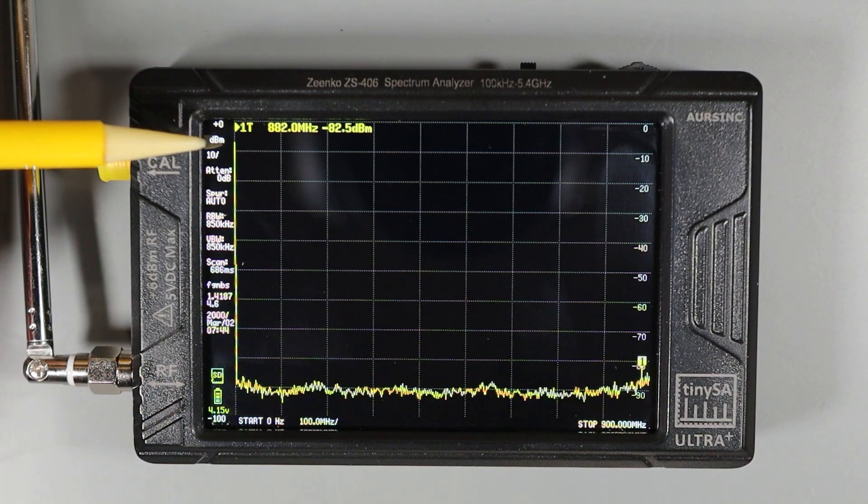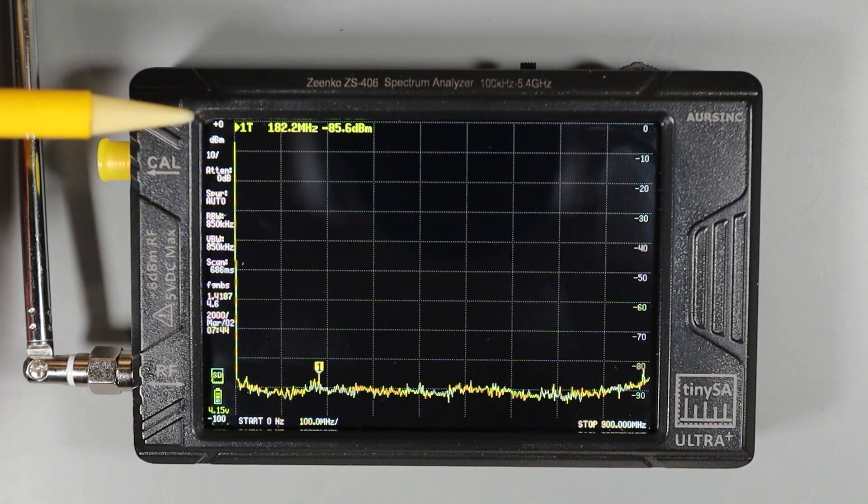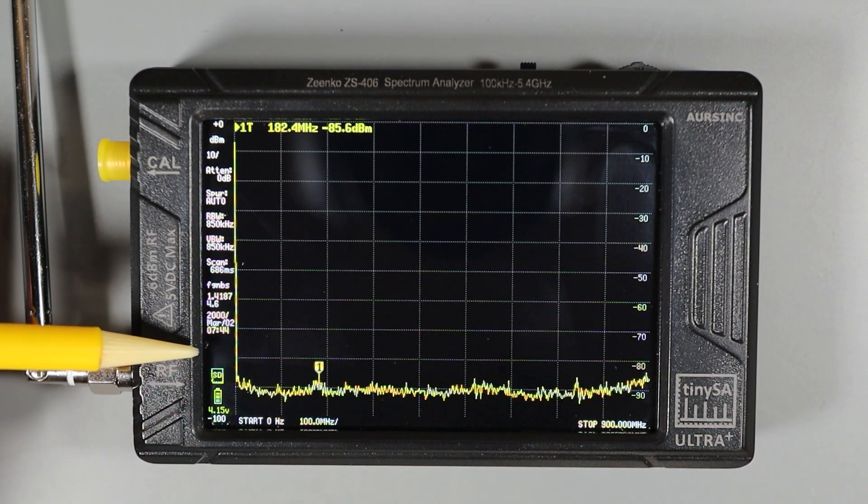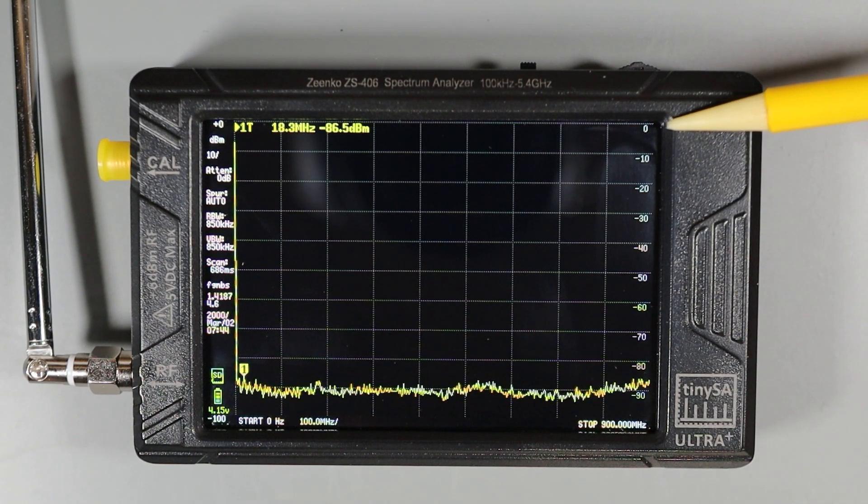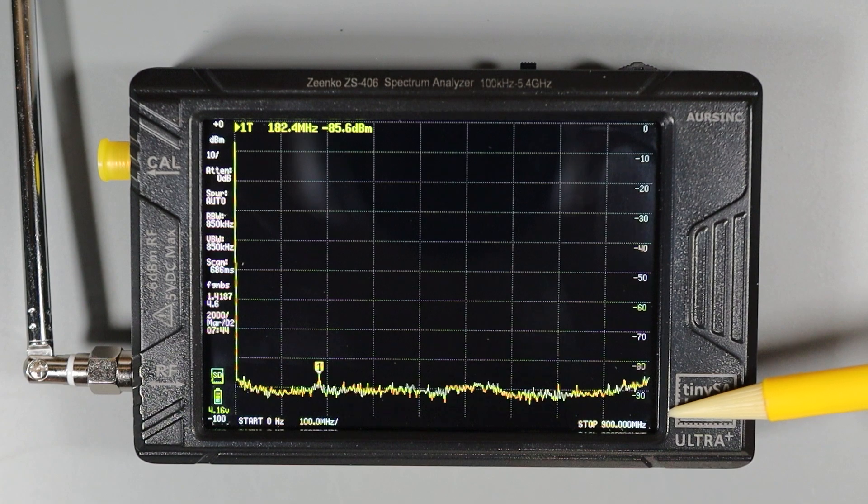Along the left edge of the screen, we can see various information about the current status of the TinySA. And then over on the right, this is our measurement scale with 0 dB being the top and negative 90 being the bottom.